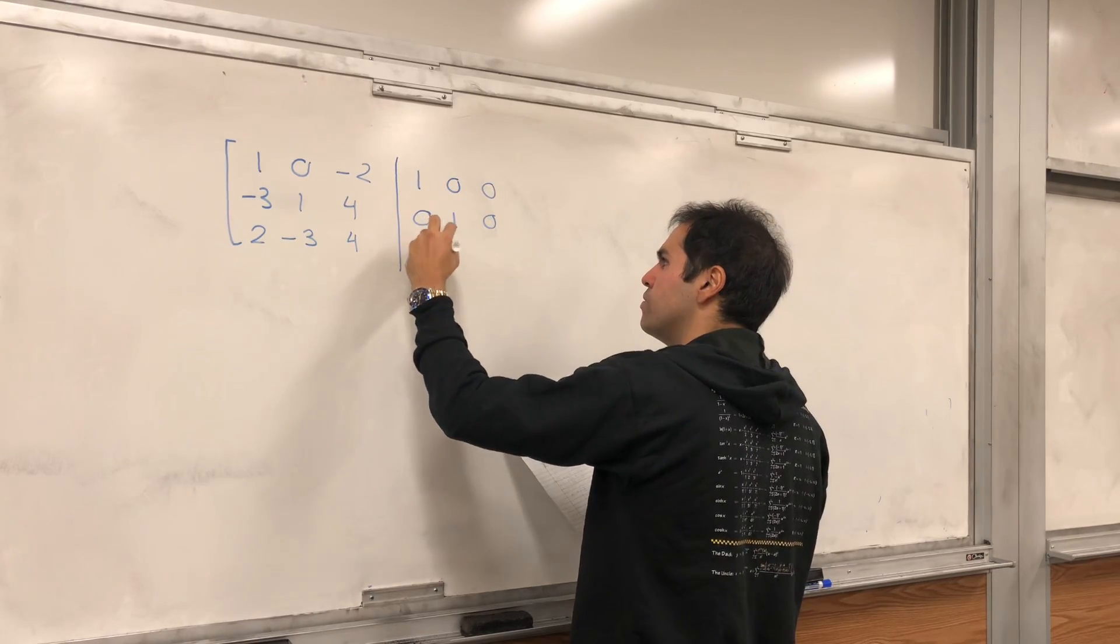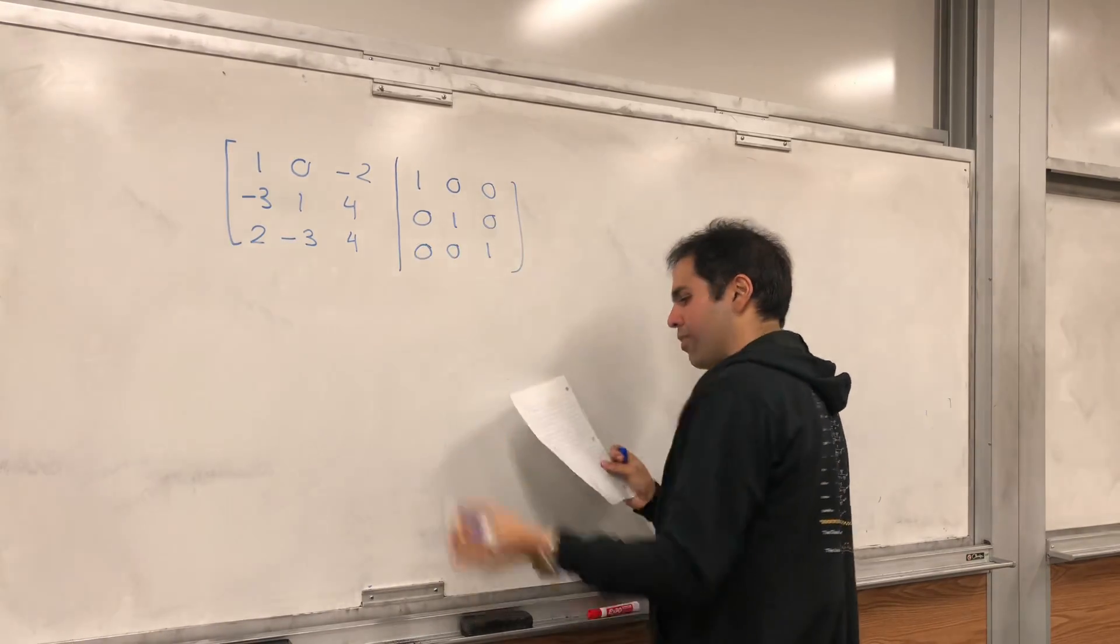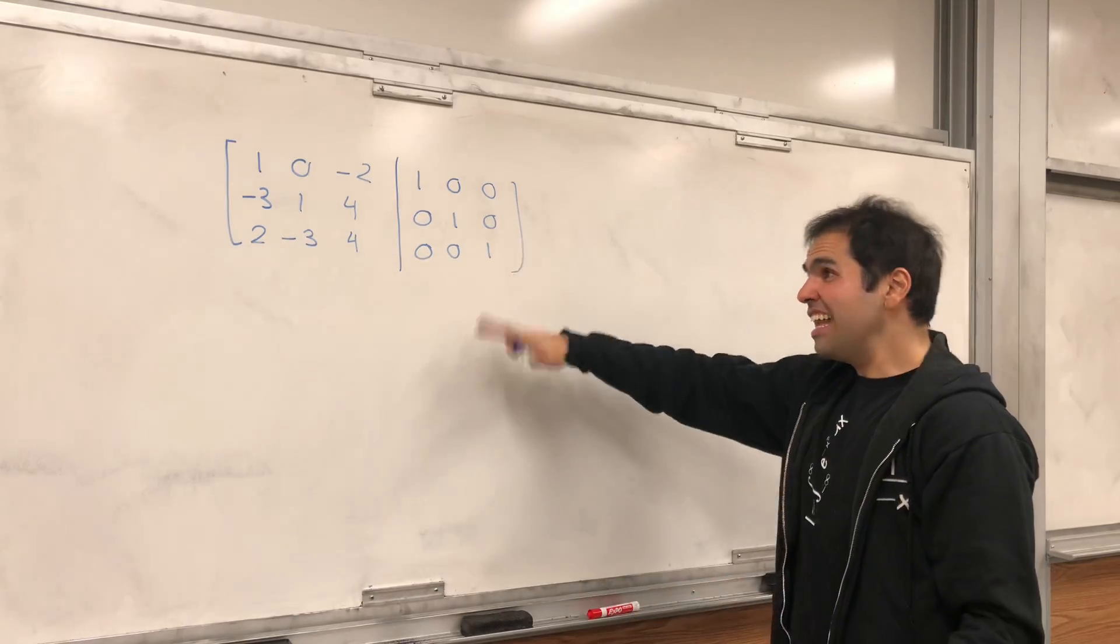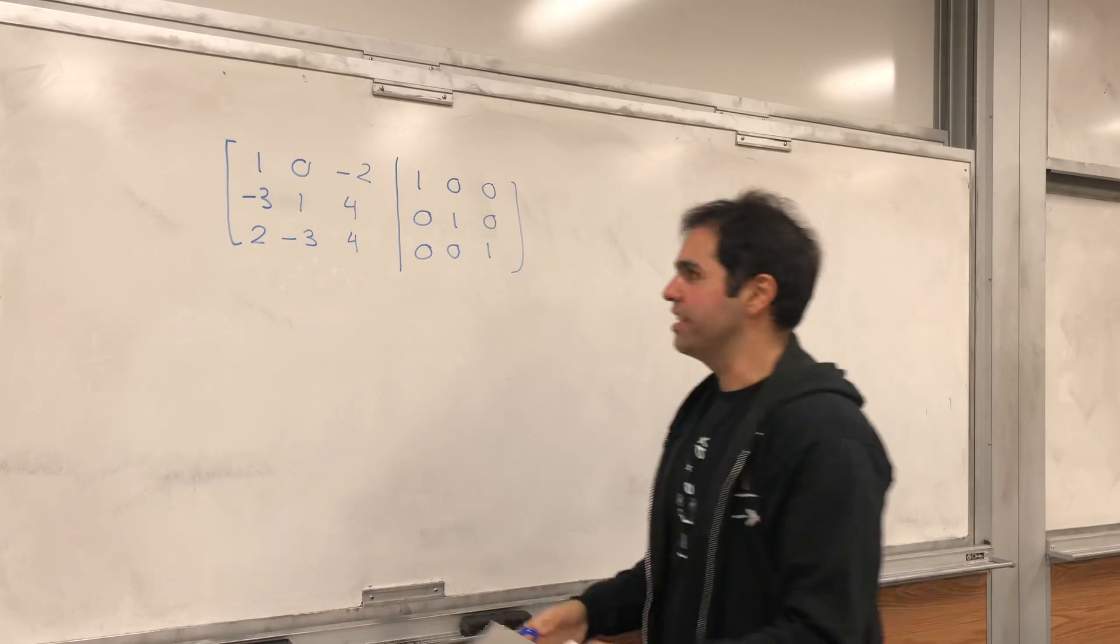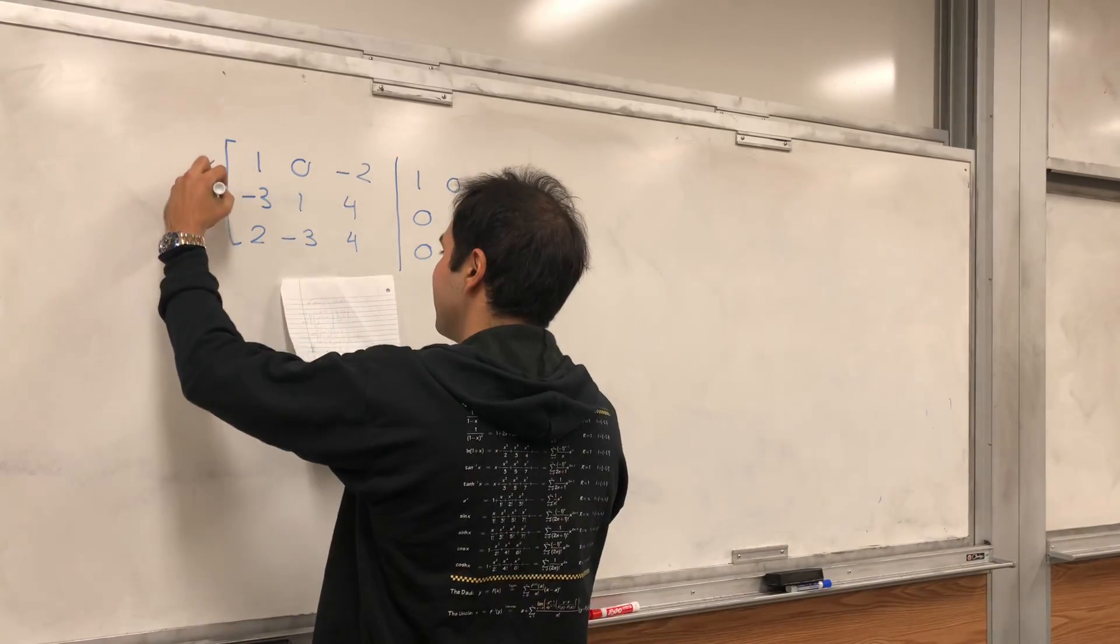1, 0, 0, 0, 1, 0, 0, 0, 1. And then you just row reduce it until the left-hand side becomes the identity. So let's do it.